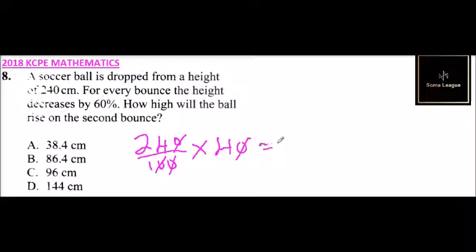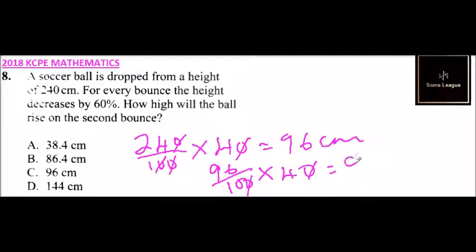So the second bounce will also reduce by 60 percent, so it will be 40 percent. You multiply 96, divide by 100, and multiply by 40. When you divide by 10, this will be 9.6 multiplied by 4.